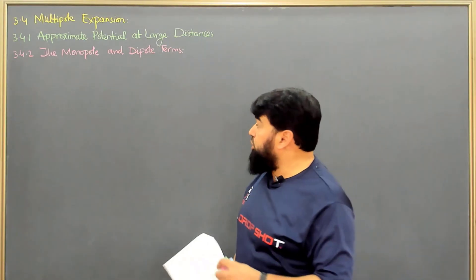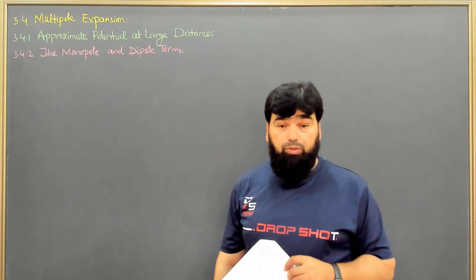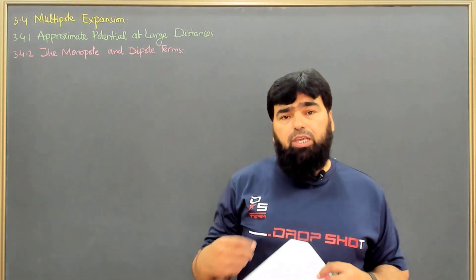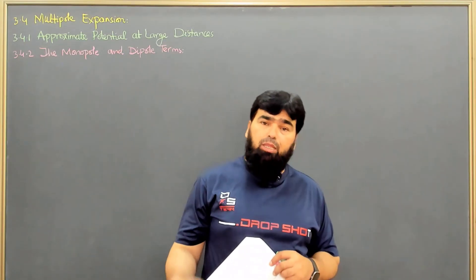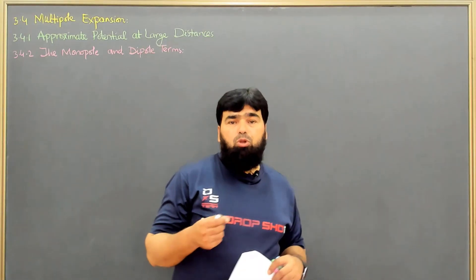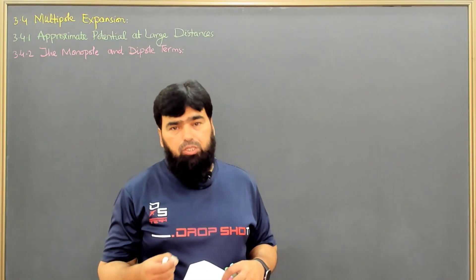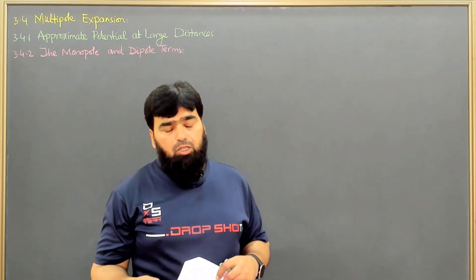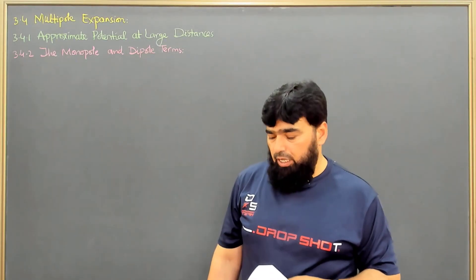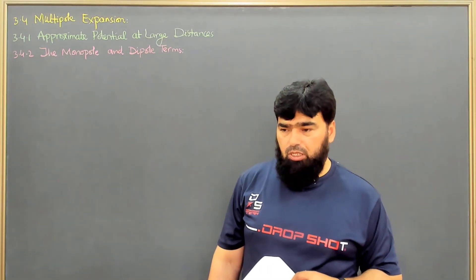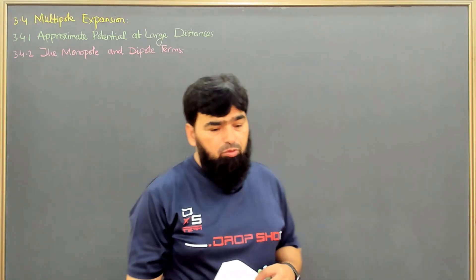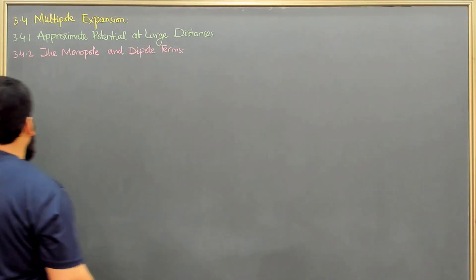In section 3.4.2 we will consider the monopole and the dipole terms. We have already done the multipole expansion, where the first term is the monopole term, the second term is the dipole term, then the third is the quadrupole, the fourth is the octupole, and so on. These two terms are very important.